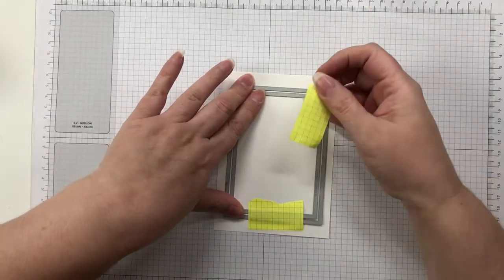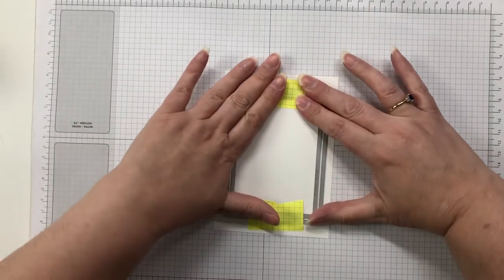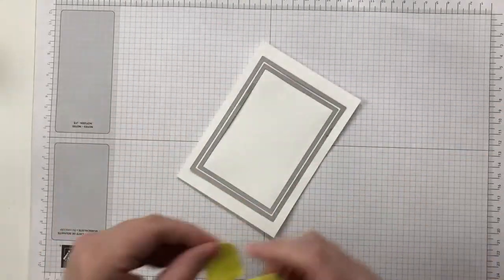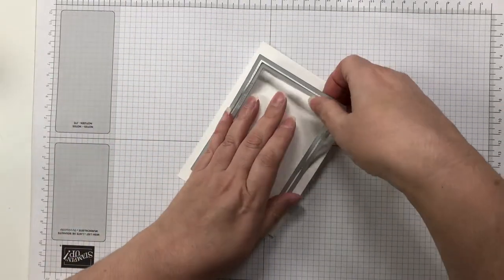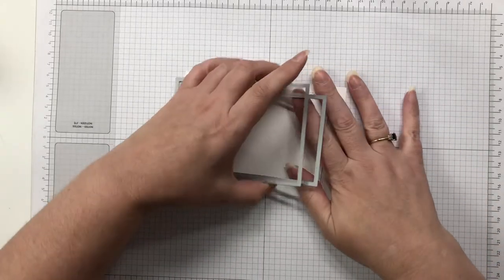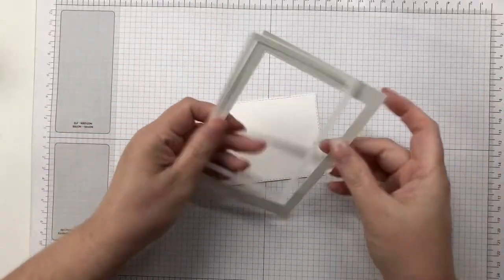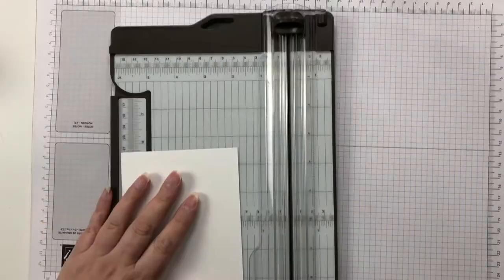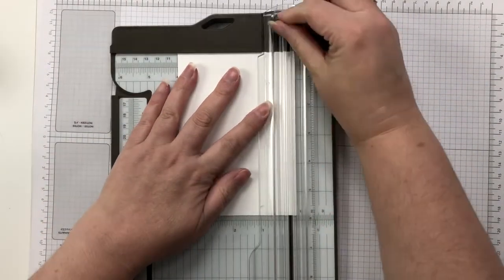Start by taking some stitched rectangle dies and making a frame. I've used the second and third largest and I use some post-it notes to hold them in place when running them through my die cutting machine so hopefully they end up being relatively even. Keep the inside though because you can use that for another project. I won't be using it for today's card though.